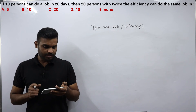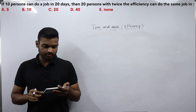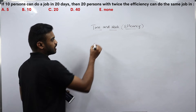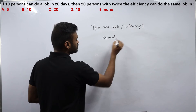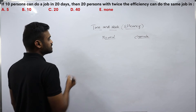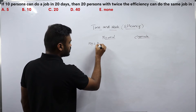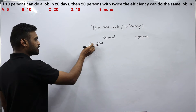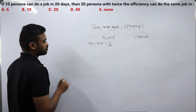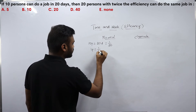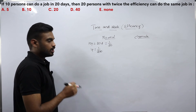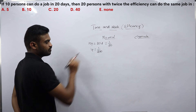Problem 2: If 10 persons can do a job in 20 days, then 20 persons with twice the efficiency can do the job in how many days? This can be solved by two methods: normal method and chain rule. For the normal method: 10 persons' one day's work is 1 by 20, so one person's one day's work is 1 by 200.